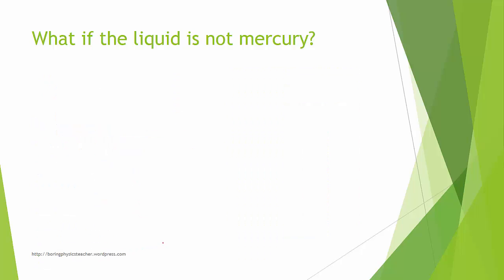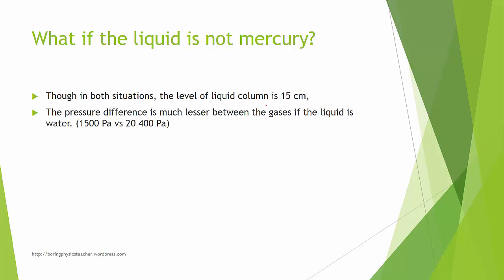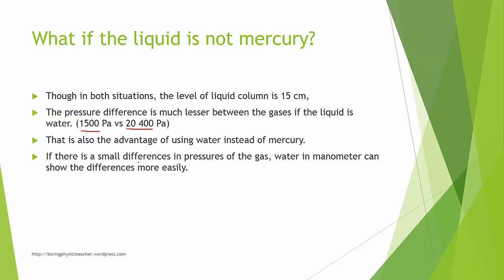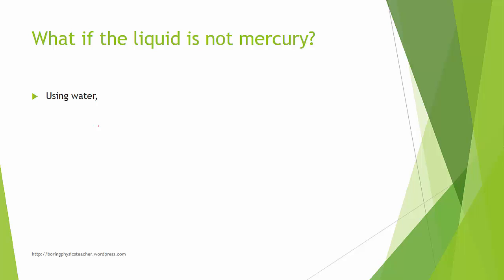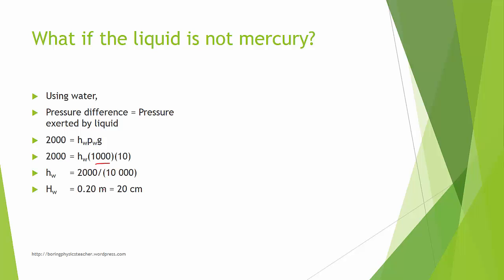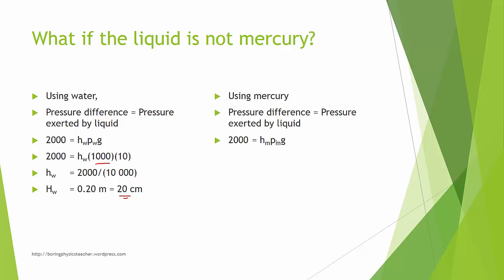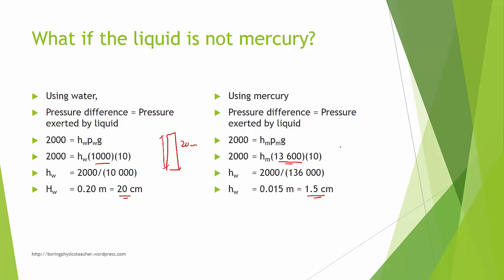In both situations the liquid column height is 15 cm, but the pressure difference is much smaller with water. That is the advantage of using water instead of mercury: for small gas pressure differences, water shows the difference more obviously. For example, a 2000 Pascal difference produces a 20 cm water column, but only about 1.5 cm of mercury — making the water column much easier to measure.